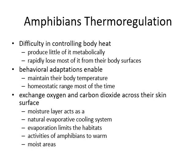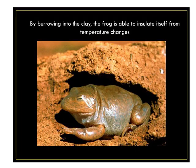Amphibians stay within a homeostatic range most of the time. They exchange oxygen and carbon dioxide across their moist skin surface, and because gaseous exchange occurs across a moist surface, water evaporation lowers the temperature. The moisture layer acts as a natural evaporative cooling system. Evaporation limits their habitats — they must live near water areas and cannot live in deserts. Activities are restricted to warm, moist areas. A burrowing amphibian, such as a frog, can insulate itself from temperature changes by burrowing into the soil.